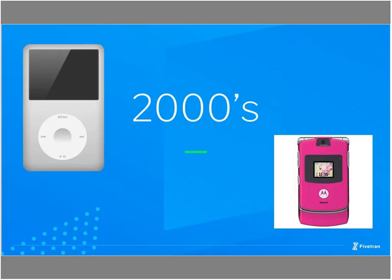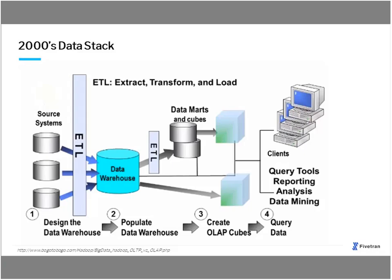Let's start with the 2000s. The year 2000 was when the pink Razr came out and also the initial iPad — that kind of sets the scene. The data stack was somewhat complicated, mostly all custom systems. The source systems companies were leveraging were enterprise on-premise custom applications. Companies were loading into the data warehouse using classic ETL, then loading to data marts and cubes — typically OLAP cubes — and then reporting directly from there.